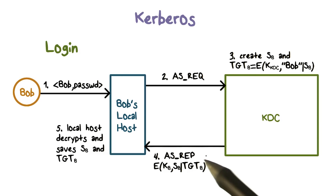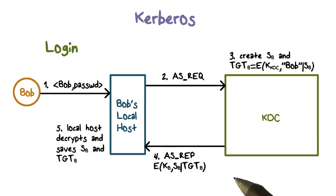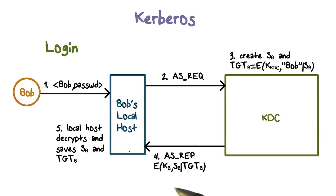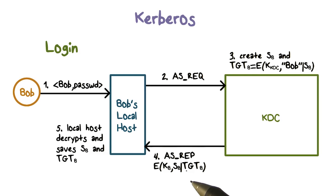The message is encrypted using the shared master key between Bob and the KDC. Because KB is the master key shared between Bob and KDC, only Bob's local workstation can decrypt this message. It can then store the per-day session key and the ticket granting ticket. Bob's local workstation will then use SB for subsequent messages with the KDC, and will include the ticket granting ticket to remind and convince the KDC to use SB.